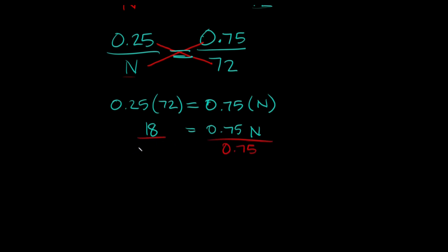And what we do to one side we do to the other. So then on this side the 0.75s cancel out so we're just left with n right here. So we get n is equal to 18 divided by 0.75 which is equal to 24.